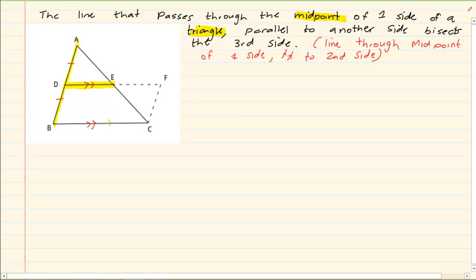Then it is parallel to another side. So the same line that we discussed is now parallel to the third line. It says if it is parallel then it will bisect the remaining side.